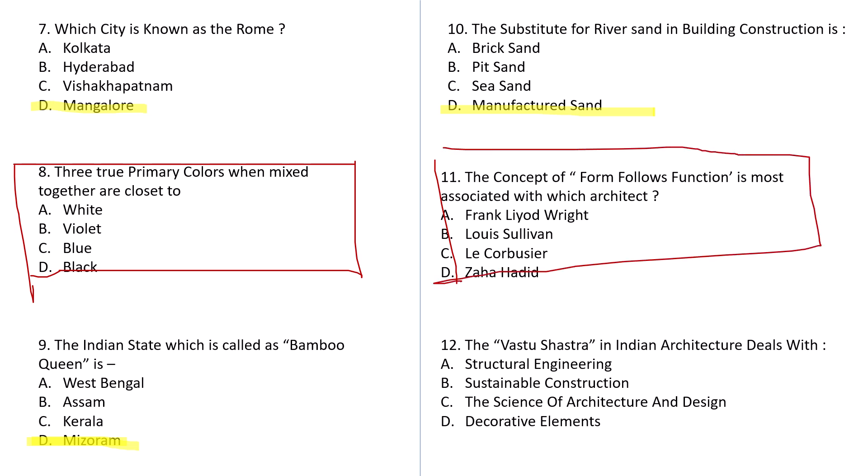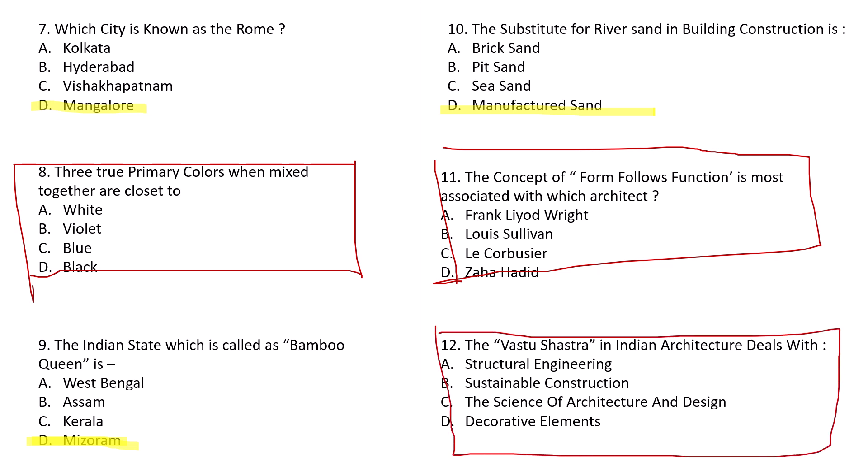Question number 12: Vastu Shastra in Indian architecture deals with: A: Structural engineering, B: Sustainable construction, C: The science of architecture and design, D: Decorative elements. This is a very simple question — try to answer it and let me know in the comment section below.